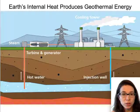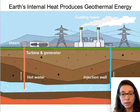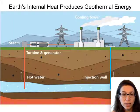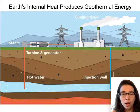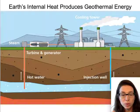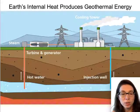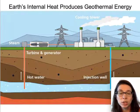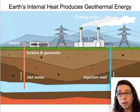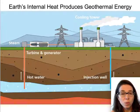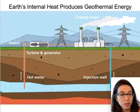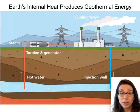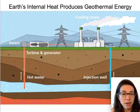Another renewable resource is geothermal energy — using heat present underground. Hot water from deep underground heat sources can be used either to generate electricity or to heat homes directly. In Iceland, most houses are heated with geothermal energy. Once you build the infrastructure, it's essentially free to heat your home, which can be very significant in places that are cold much of the year.